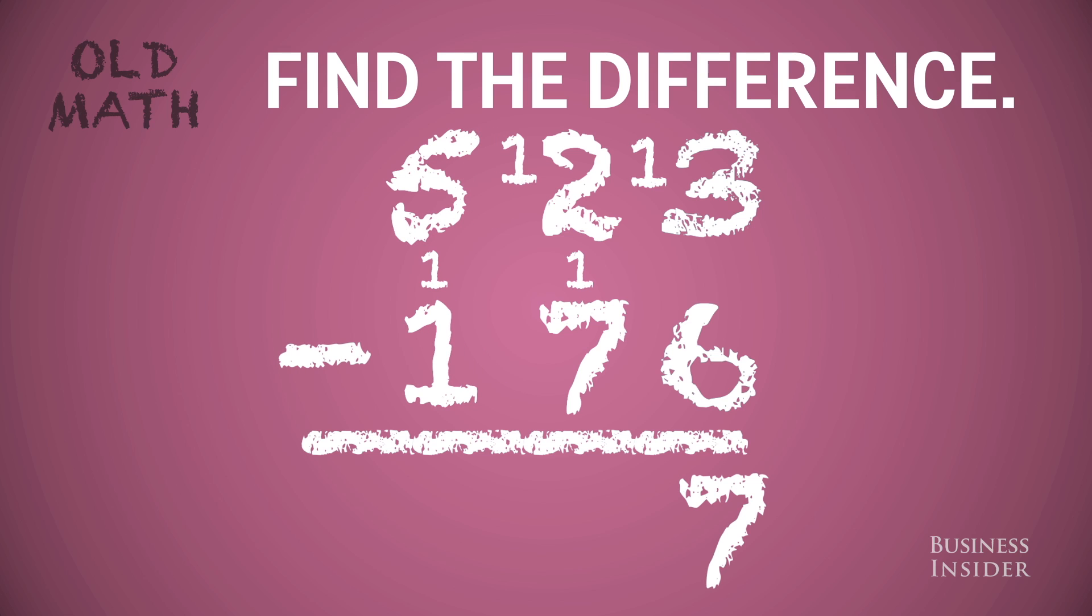Now we need to borrow and pay back again, and 12 minus 1 minus 7 is 4. And 5 minus 1 minus 1 is 3.